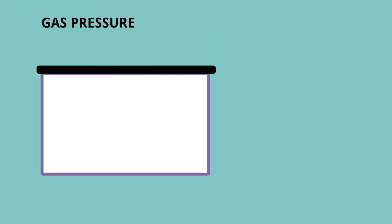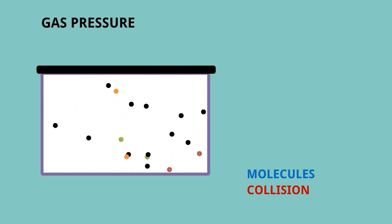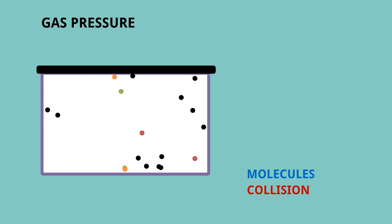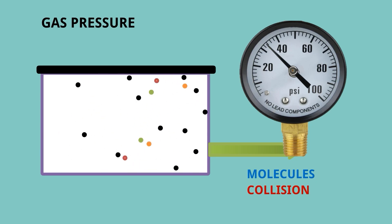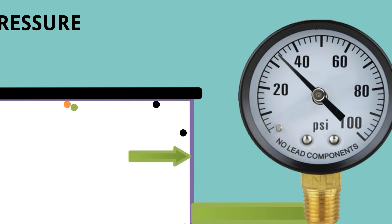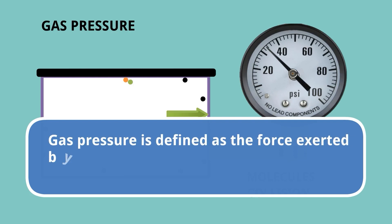Now let's come to gas pressure. We know gas is composed of a myriad of molecules, and all the time these molecules are colliding with the container as well as each other. If you add a pressure gauge, you will see a rise in its reading — here it changed from 0 psi to 34 psi — because molecules are applying force on the container wall per unit area. So gas pressure is defined as the force exerted by the gas particles colliding with the wall per unit area in a container.